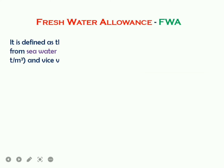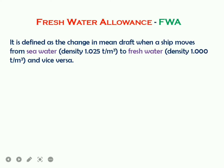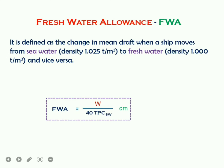Fresh water allowance is defined as the change in mean draft when a ship moves from sea water of density 1.025 t/m³ to fresh water of density 1.000 t/m³. These are specified densities for this particular case. The expression for fresh water allowance is W divided by 40 × TPC, where W is the mass of the ship in tons and TPC is the tonnes per centimetre immersion in sea water.